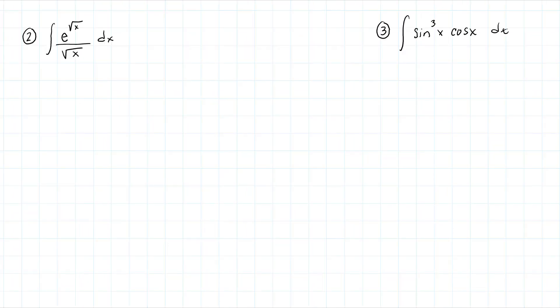Let's do one more example. When we come along here, the first thing is to figure out what our u should be. I see the exponential function and also a square root in the denominator. It just takes lots of practice doing u-substitutions to figure out the appropriate u. Sometimes we pick a u and can't quite make the substitution work — then we go back and try a different u.